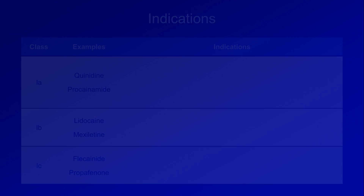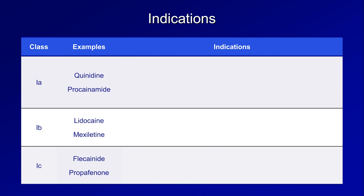Now let's talk about indications, starting back with the 1a drugs. Quinidine is very rarely used these days, at least in the US. When it is used, it is as a last-ditch effort for suppression of ventricular tachycardia.